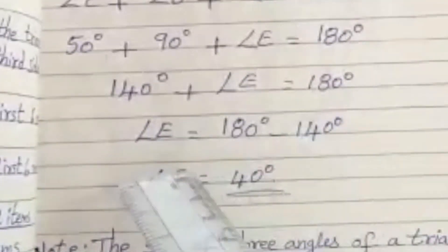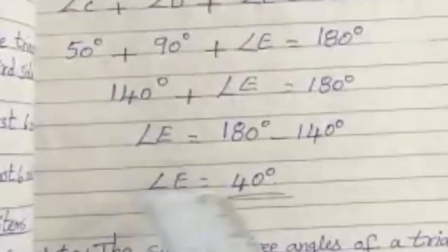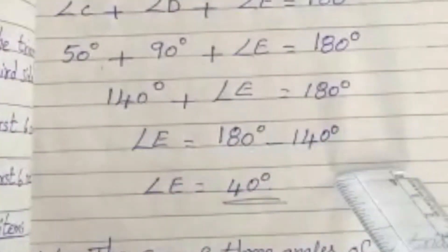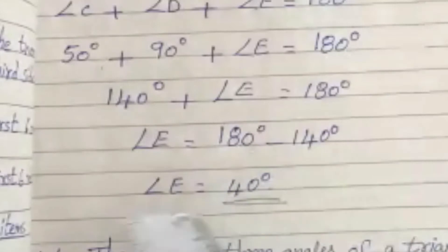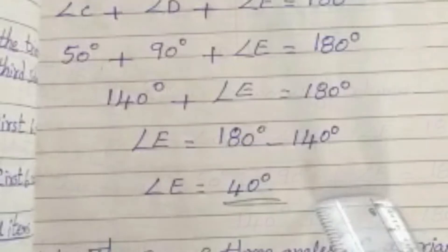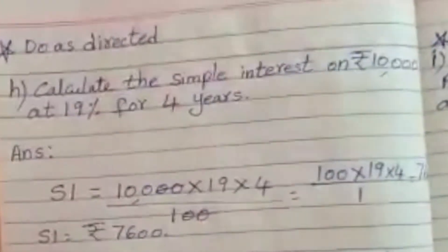So to find out angle E we have to do the subtraction. 180 minus 140, then the angle E is equal to 40 degrees. This is the missing angle. Now we shall see the next question.